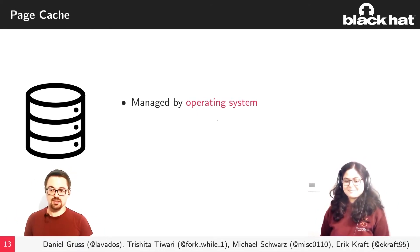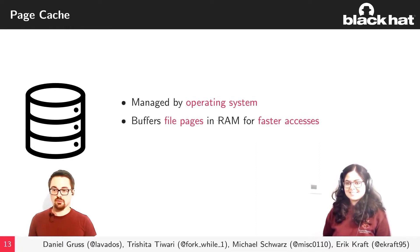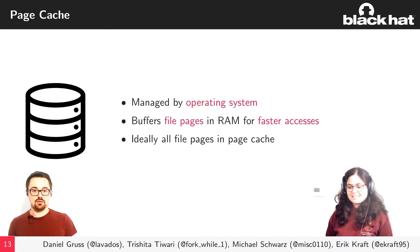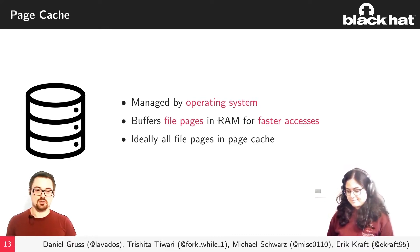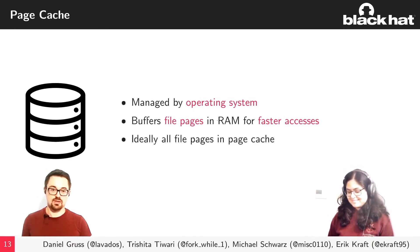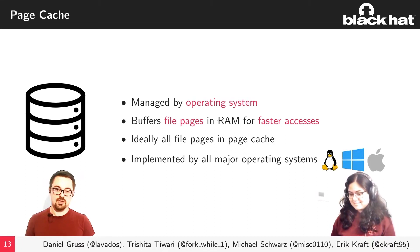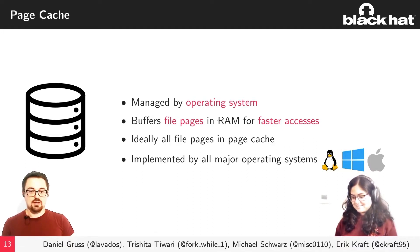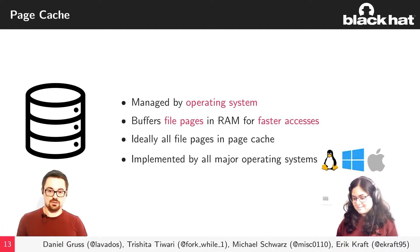The page cache is a software cache managed by the operating system. Its main purpose is to buffer file pages in physical memory so that future accesses to them are faster. In an ideal world, all file pages would be in the page cache. In reality, you're limited by the amount of physical memory. Nowadays, all major operating systems — Linux, Windows, and Mac — implement a page cache.